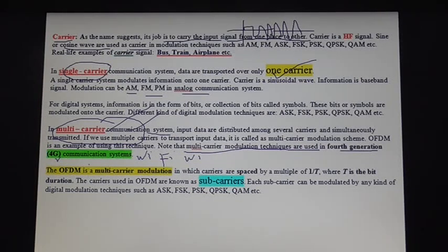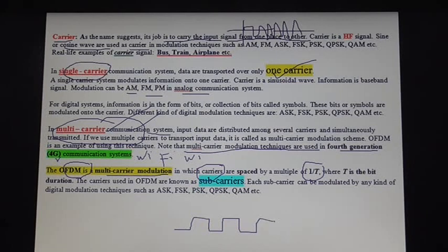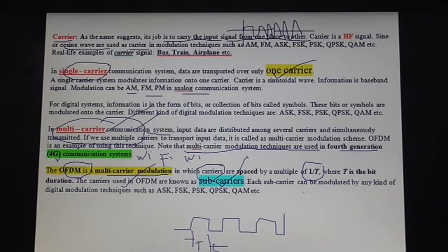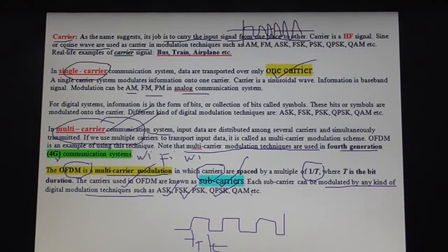Note that OFDM is a multi-carrier modulation technique and all the carriers are spaced 1/T apart, where T is the bit duration used in the communication system. The carriers used in OFDM are known as sub-carriers. Each sub-carrier can be modulated by any kind of digital modulation technique such as ASK, FSK, QAM, etc.